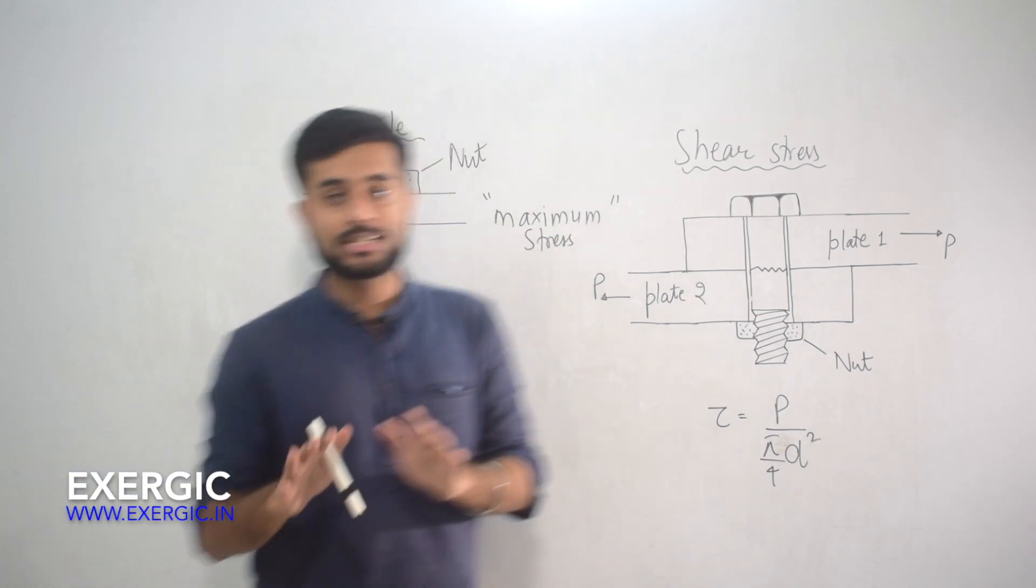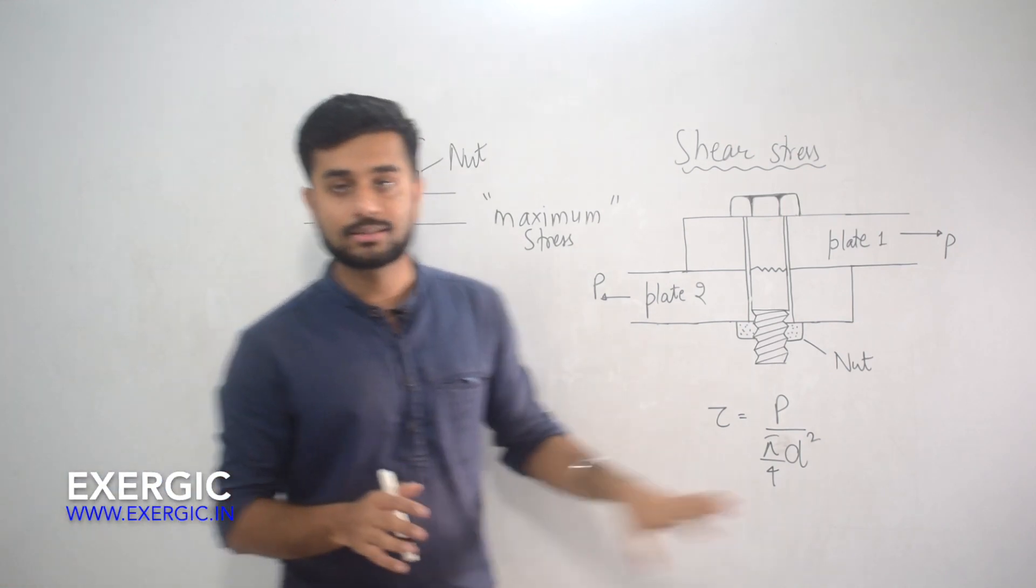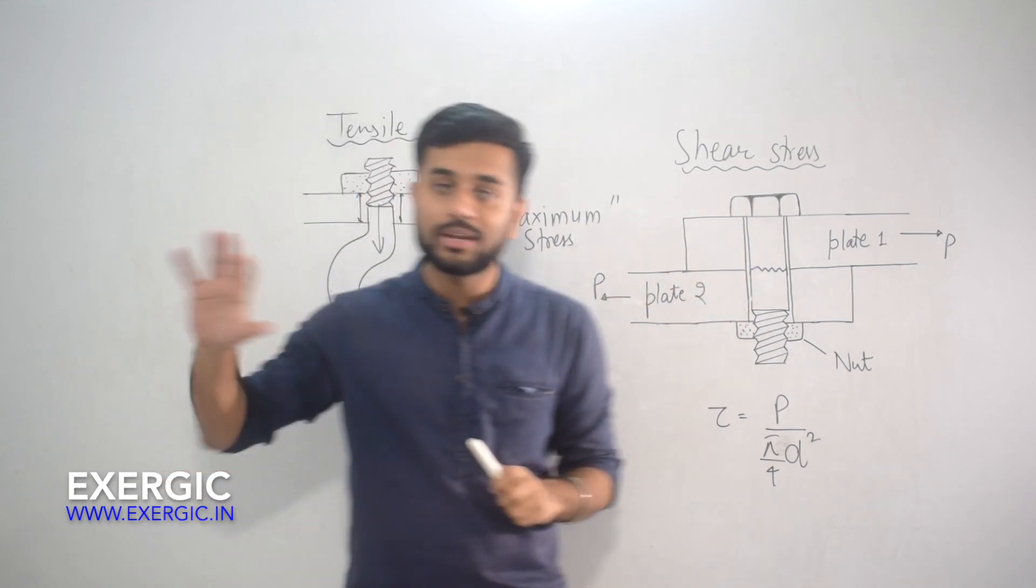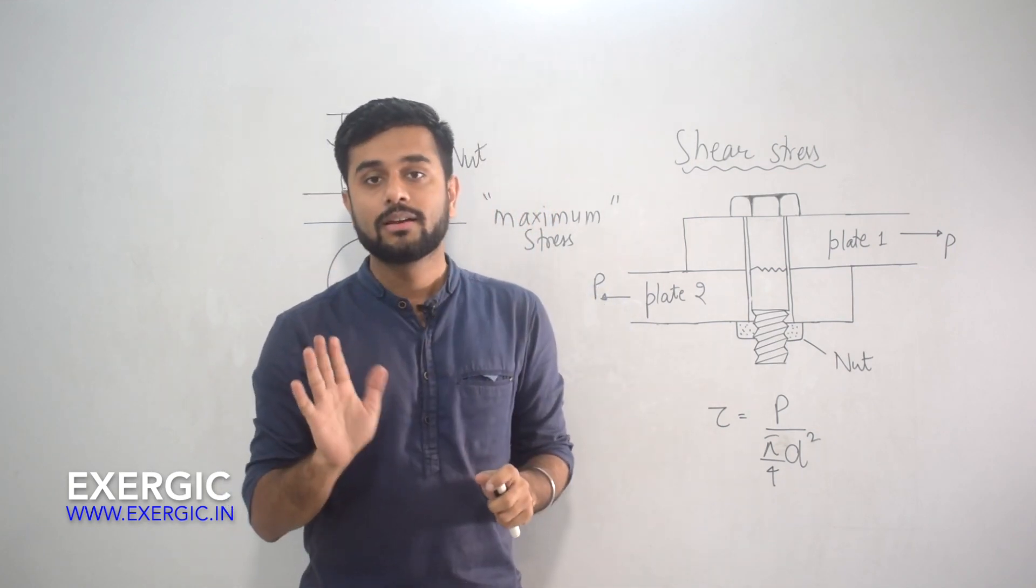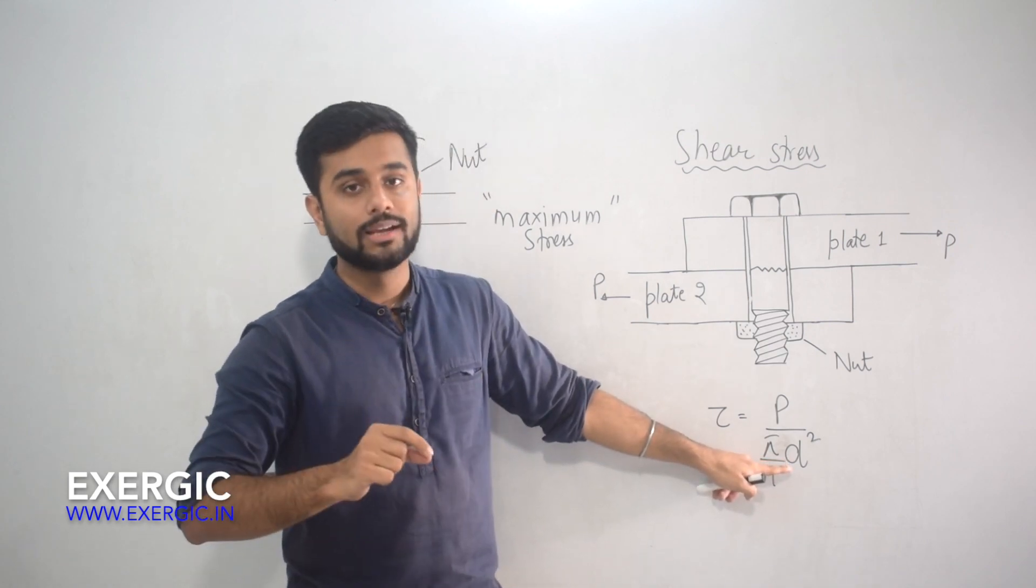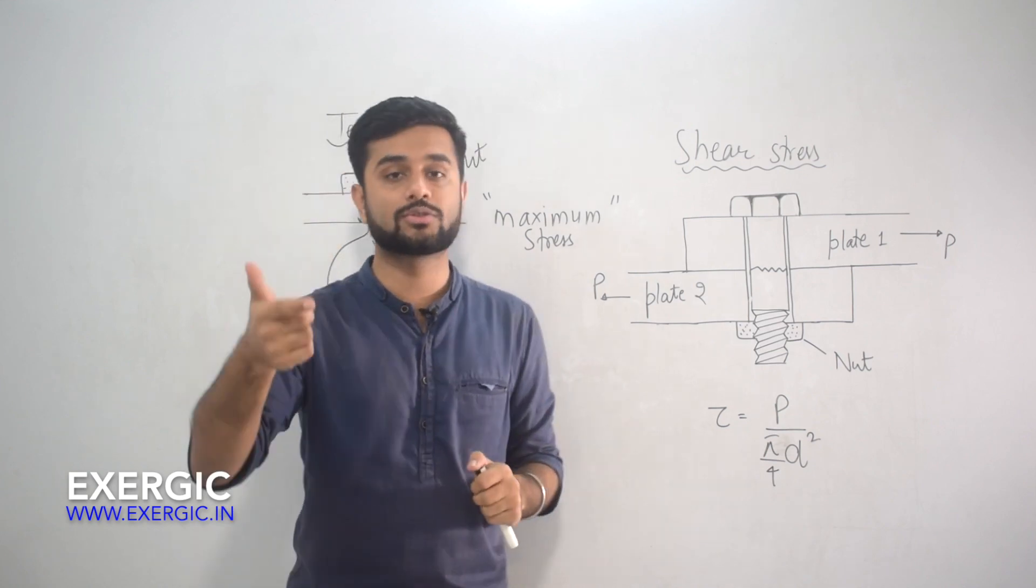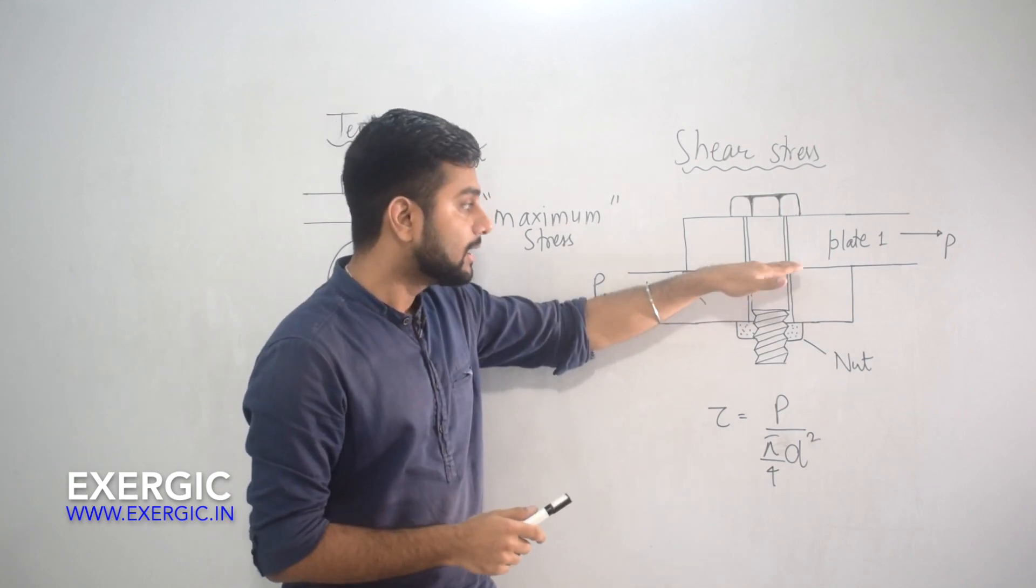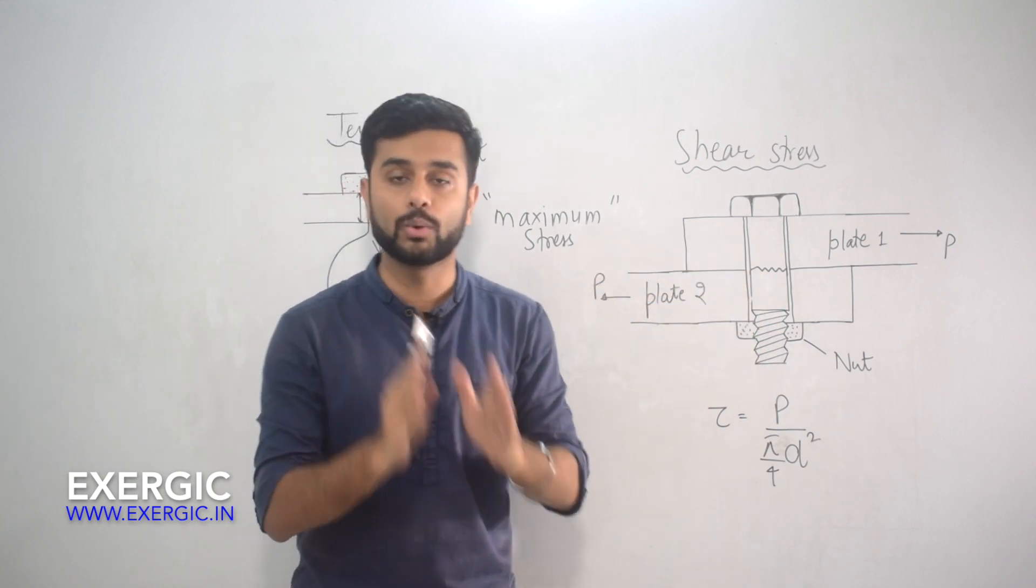In GATE, no question has been asked yet from this. All the questions which have tested this concept have been asked from the case of shear stress only. And almost every question was having this term: determine the maximum stress. You have to use the major diameter or the nominal diameter only to determine the maximum stress. Don't think that question mentioned that maximum stress is to be determined, so we will take the core diameter. That is not true because shear area does not lie in the threaded part. It lies in the unthreaded part only.